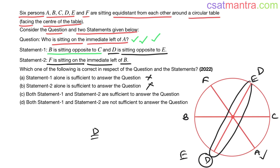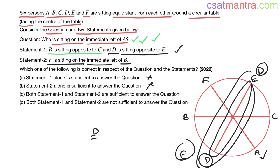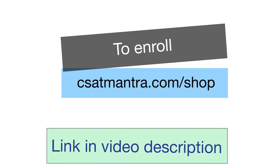But D and E can be arranged two ways — it can be this way or that way. So in one possibility the answer is D, and in another possibility the answer is E. Both statements together are still not sufficient to answer the question. Therefore the answer is D — meaning data is insufficient.